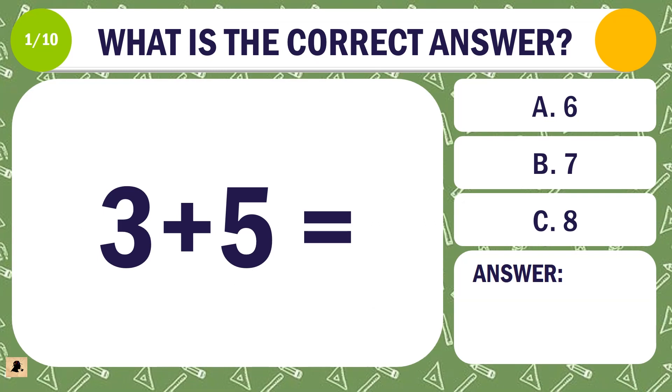Question 1. What is the correct answer for 3 plus 5? A. 6. B. 7. Or C. 8.